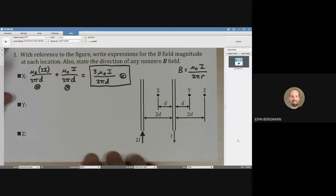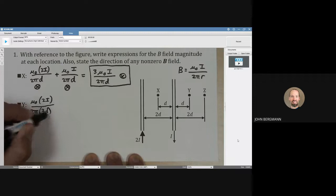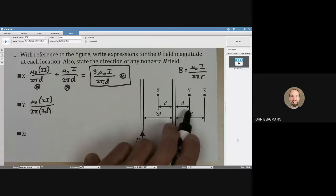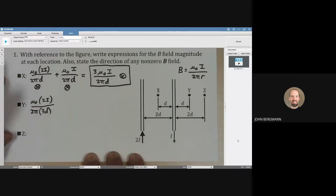How about for point y? For point y, let's take the wires one at a time. We're going to go μ₀ times 2i, we're looking at that wire first, and we're going to divide by 2π. How far away is point y? It looks like it's 3d away—2d to there and then another d—so that's 3d.